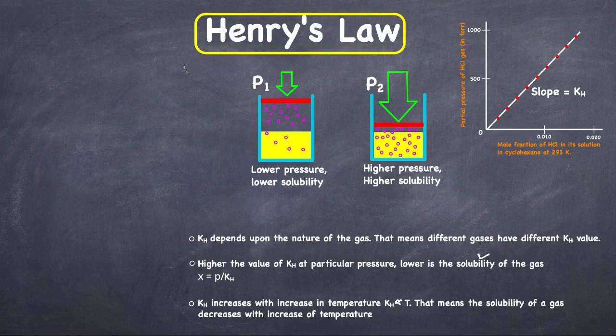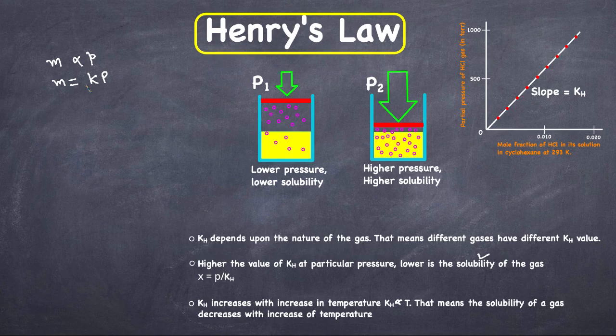Hello everyone, in this video I'm going to go over Henry's Law. It states that the solubility of a gas in a liquid at a particular temperature is directly proportional to the pressure of the gas in equilibrium with the solution. So if we measure solubility in M (molarity), then M is directly proportional to pressure P, and it can be written as M = KP, where K is the constant.